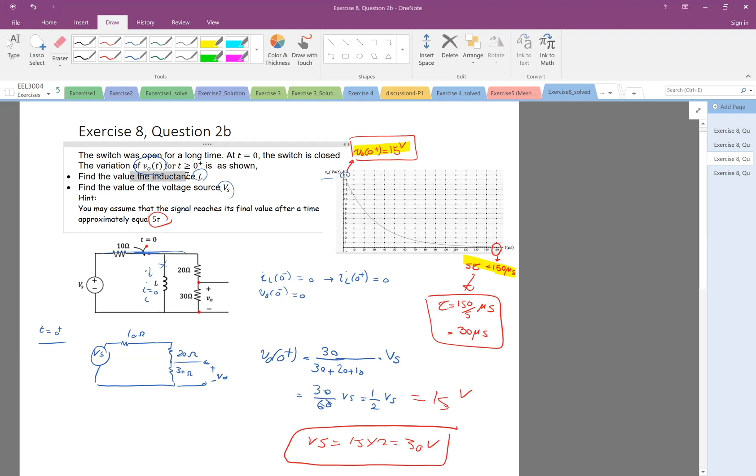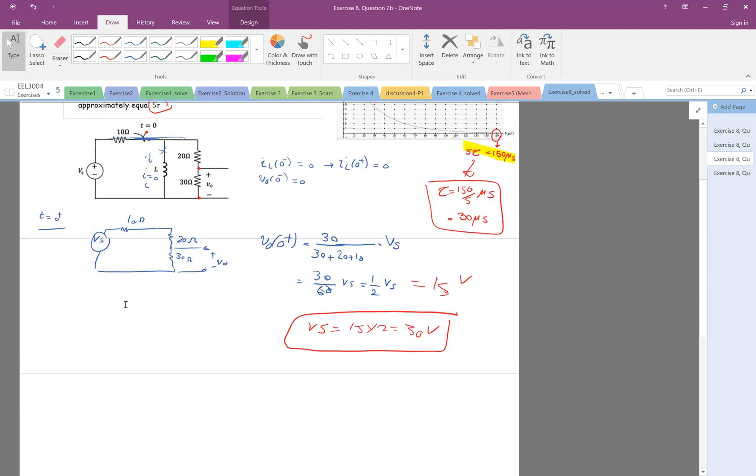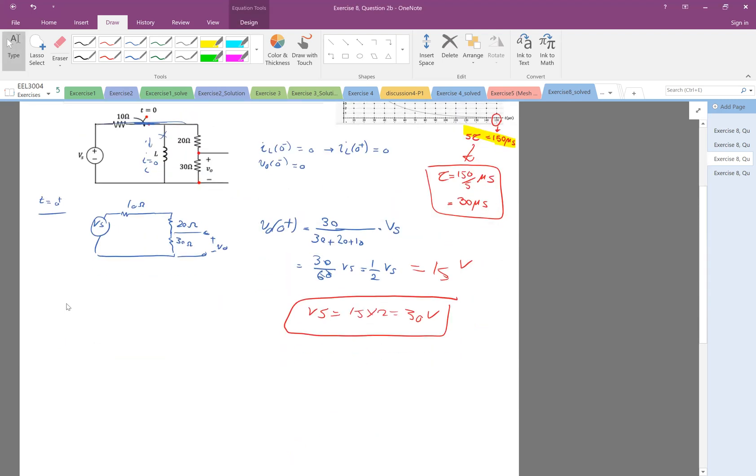Now we also need to find the value of the inductance L. We know tau. Tau is equal to L divided by R equivalent. And see, now I have tau in this example. And if I find R equivalent, then I will know L. So therefore, let's look at the R equivalent of this circuit.